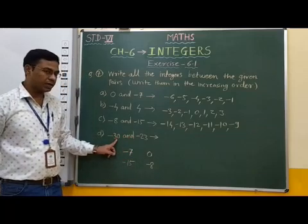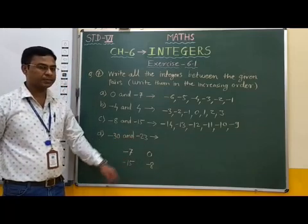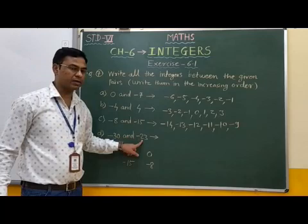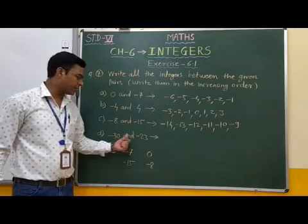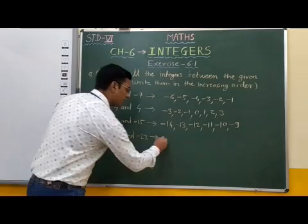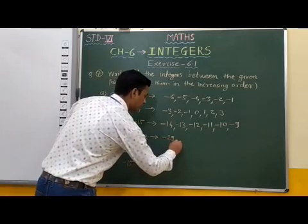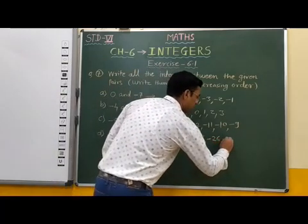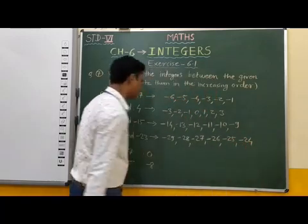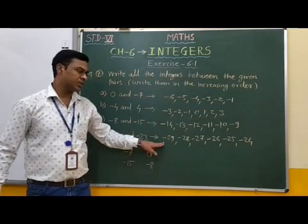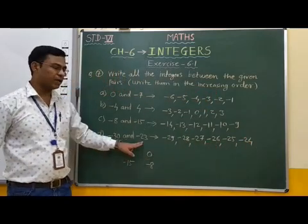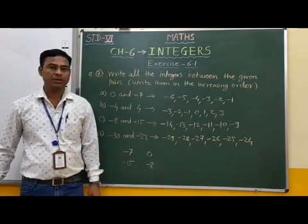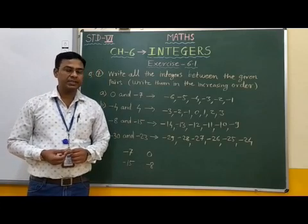Next, minus 13 and minus 23. Here, minus 23 is smaller and minus 13 is greater. Therefore, the integers between minus 23 and minus 13 are: minus 22, minus 21, minus 20, minus 19, minus 18, minus 17, minus 16, minus 15, minus 14. These integers are between the two given numbers and are in increasing order. Students, I hope it is clear to you. Thank you.